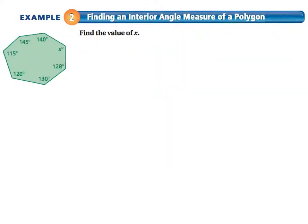Example 2: Finding an interior angle measure of a polygon. I want you to find the value of x. What would I do? Well, the first thing we need to know is, what do all of these add up to give me? So we use the formula.